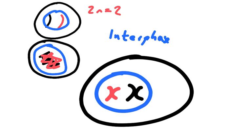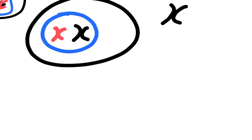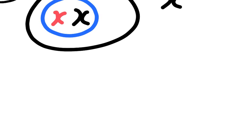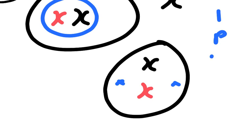During interphase the number of chromosomes stays the same — you've still got 46 chromosomes — but now those 46 chromosomes have gone from being a single chromatid to being two chromatids joined together by a centromere. The nuclear membrane then breaks down and the chromosomes line up on the equator.